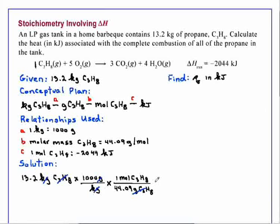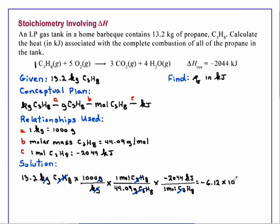We have moles of propane, which we now relate to the energy from the relationship that 2,044 kilojoules are released when 1 mole of propane undergoes the above reaction. So moles of propane cancel, and this gives us our answer of negative 6.12 times 10 to the 5th kilojoules.